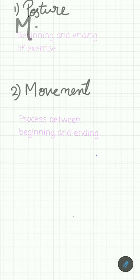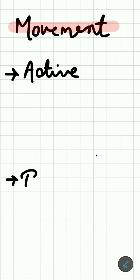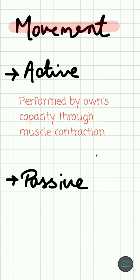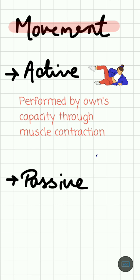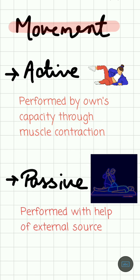Movement is of two types: active movement and passive movement. Active movement is performed by one's own capacity through muscle contraction. For example, in this image the lady is able to lift her leg up through her own capacity without the help of an external source. Passive movement is performed with the help of an external source — for example, a physiotherapist helping the person to lift the leg up.